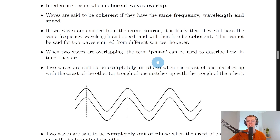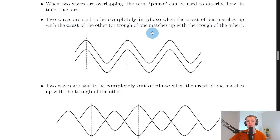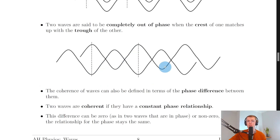When two waves are overlapping, the term phase can be used to describe how in tune they are. Two waves are said to be completely in phase when the crest of one matches up with the crest of the other, or the trough of one matches up with the trough of the other. Here you can see two waves overlapping where the crests and troughs match up.